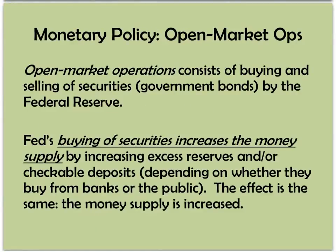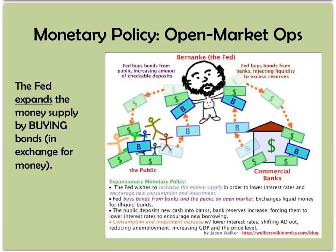The most important tool is open market operations, which consists of buying and selling securities — bonds — by the Fed. When the Fed buys bonds, it increases the money supply by increasing excess reserves and/or checkable deposits, depending on whether they buy from banks or from the public, but the effect is the same. The bond flows to the Fed, which pays for it, meaning money flows out of the Fed and into banks or into the public's checking accounts — both increase the money supply. So: buy bonds to expand the money supply.